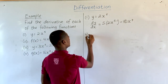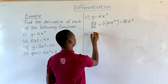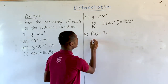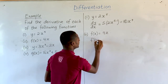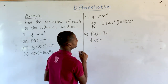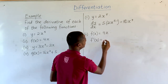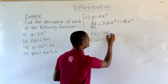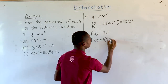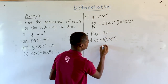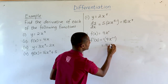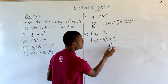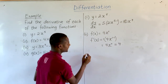The second function: f of x is equal to 4x. So f prime of x, the derivative of f of x, is 1 times 4x raised to the power 1 minus 1. This gives us 4x raised to the power 0, which is equal to 4, because x raised to the power 0 is 1.